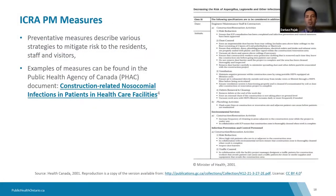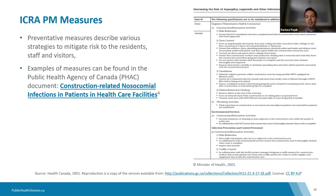To identify the specific requirements generated by the ICRA table, one resource is from the Public Health Agency of Canada, which specifically addresses construction in healthcare facilities and provides a list of specific measures. For example, PM measure three covers dust control, ventilation requirements, debris removal and cleanup, and traffic — all outlined with specific requirements. When PM measure three is required, both PM measures one and two are also required as a combination of resources.